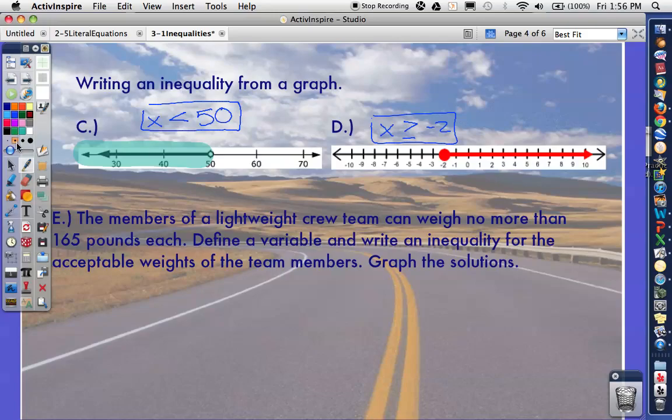We can apply this to word problems. The members of a lightweight crew team can weigh no more than 165 pounds each. Define a variable and write an inequality for the acceptable weights of the team members and graph the solutions. So when we define our variable, I'm going to use W, and I'm going to label that acceptable weight. You need to tell me what it's standing for. They must weigh no more than. No more than tells you that it must be less than. Can it include 165? Well, is 165 no more than 165? Yes. So we can include 165. So I'm going to say that the weight has to be less than or equal to 165.